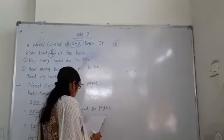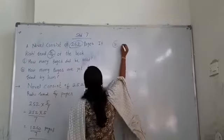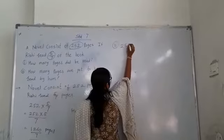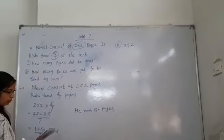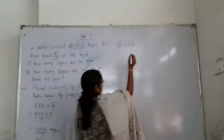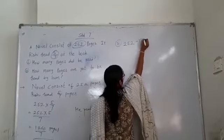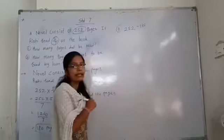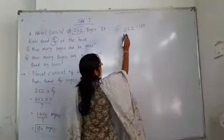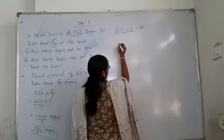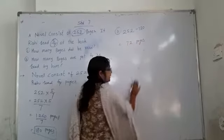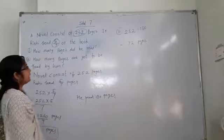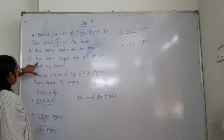In that question, we will take our total pages, 252 minus 180. Why do we take 180? Because he read 180 pages. So 252 minus 180 equals 72 pages. This is our second answer.